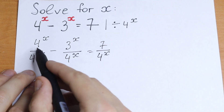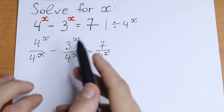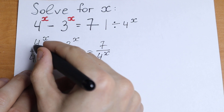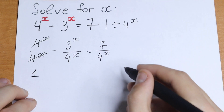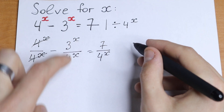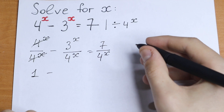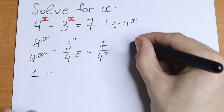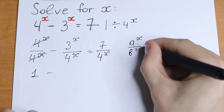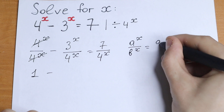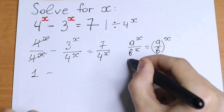Right here we're dividing the same elements: 4 to the power x divided by 4 to the power x — as a result, we get 1; we can cancel these elements. Then, for the remaining term, we have the same exponent with different bases. The rule is: a to the power x divided by b to the power x can be written as (a over b) to the power x.